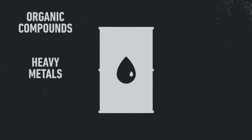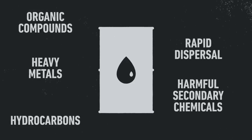They cause such damage to the environment because petroleum is a toxic mix of organic compounds, heavy metals and hydrocarbons. Add to that rapid dispersal and the breakdown into even more damaging secondary chemicals and you have a disaster that can cause serious acute and long-term effects.